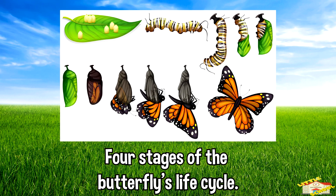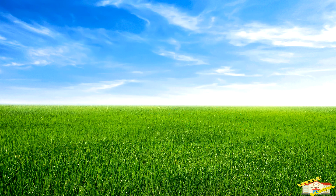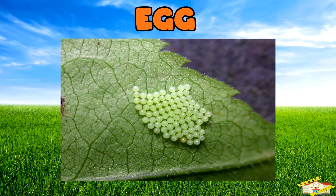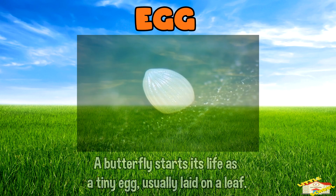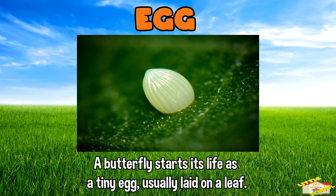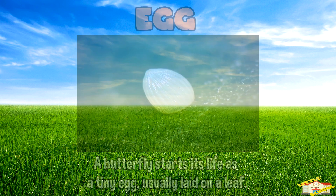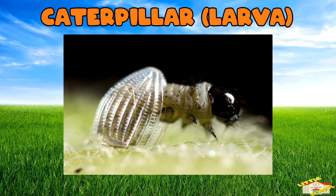And finally, let's learn the four stages of the butterfly's life cycle. Egg: a butterfly starts its life as a tiny egg, usually laid on a leaf.